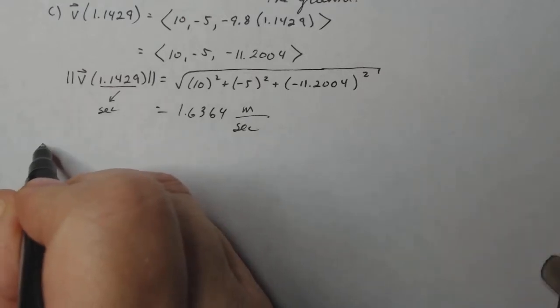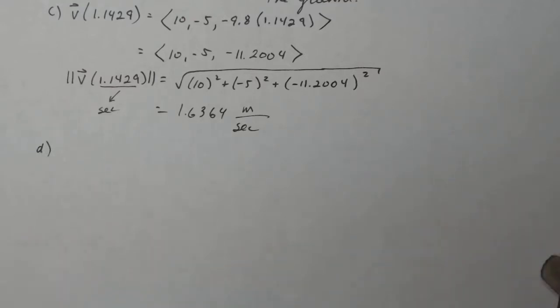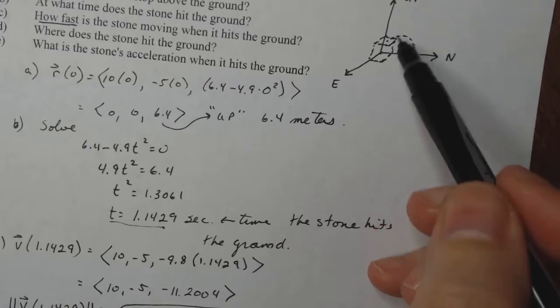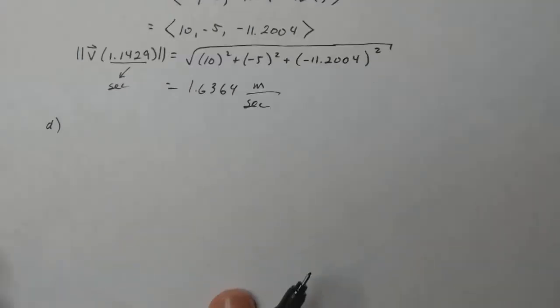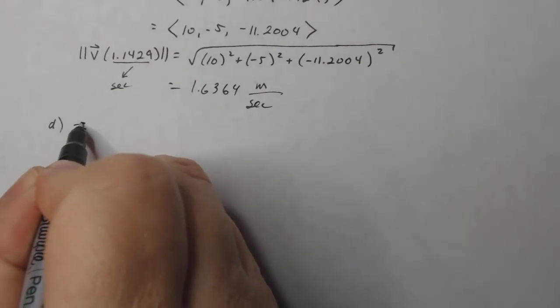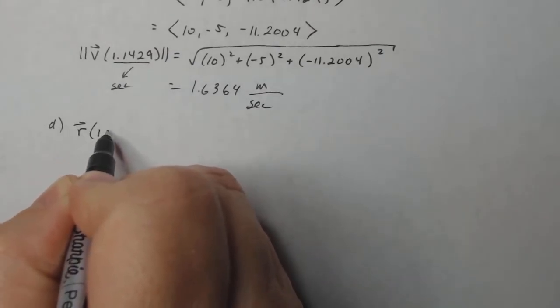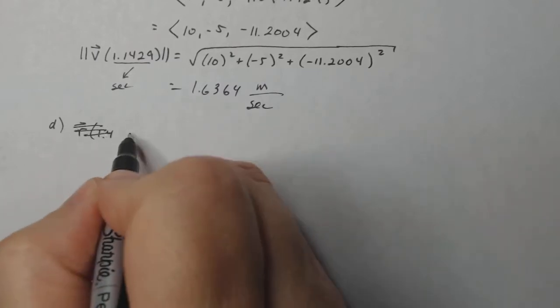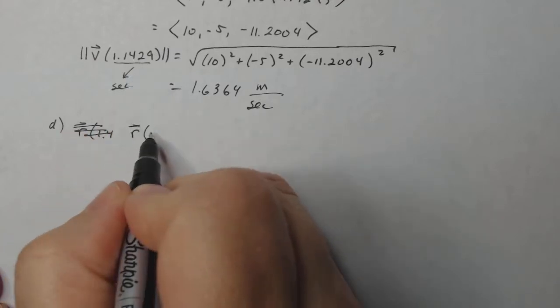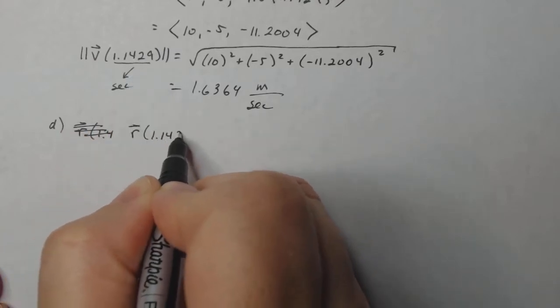D says, where does the stone hit the ground? So I just need a place, a position. So I need its position when it hits the ground. The position should be zero in the k direction because that's up. If I'm on the ground, that direction is zero. So that should give me my position vector at the time it hits the ground. So r of 1.1429.